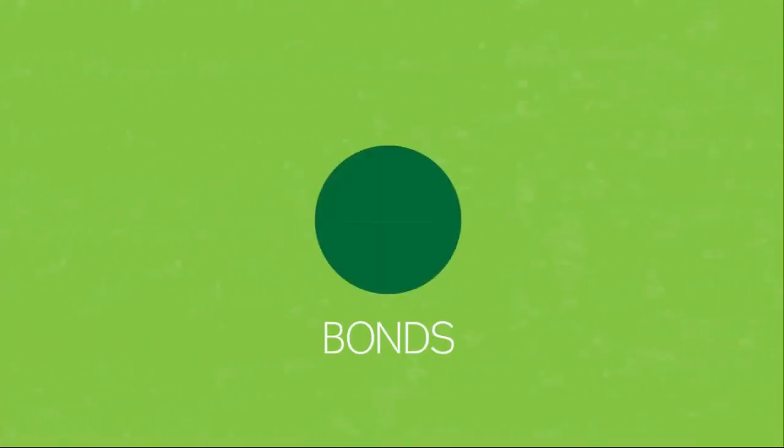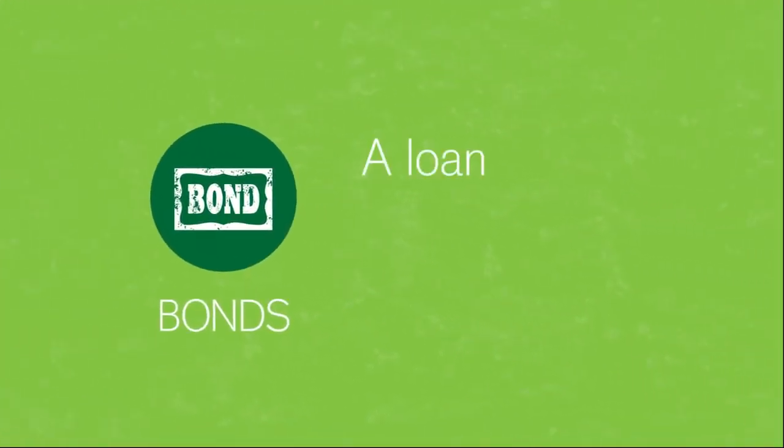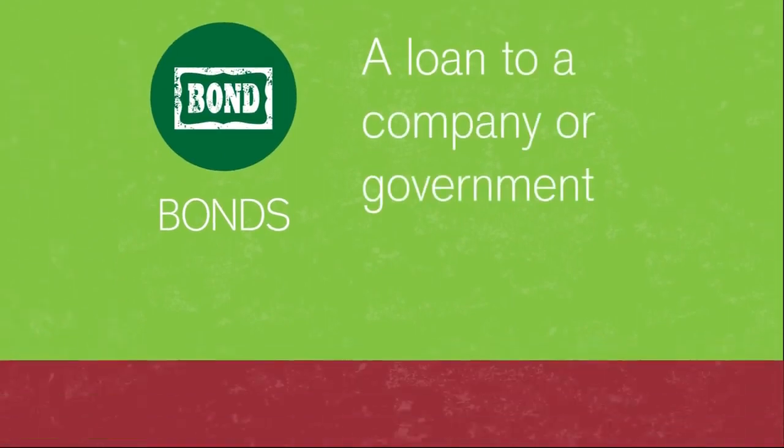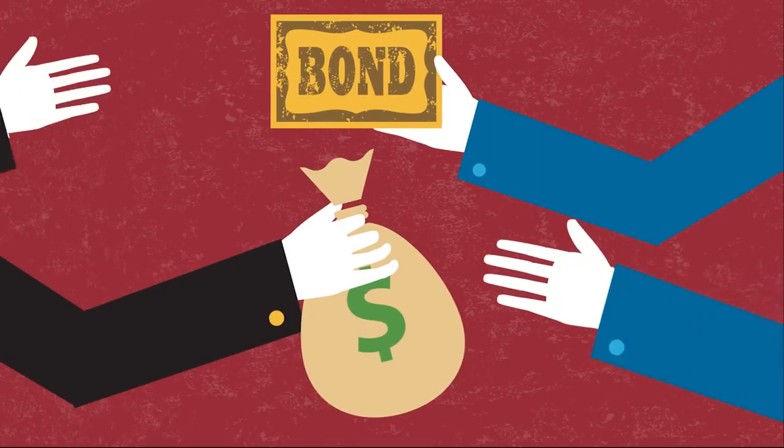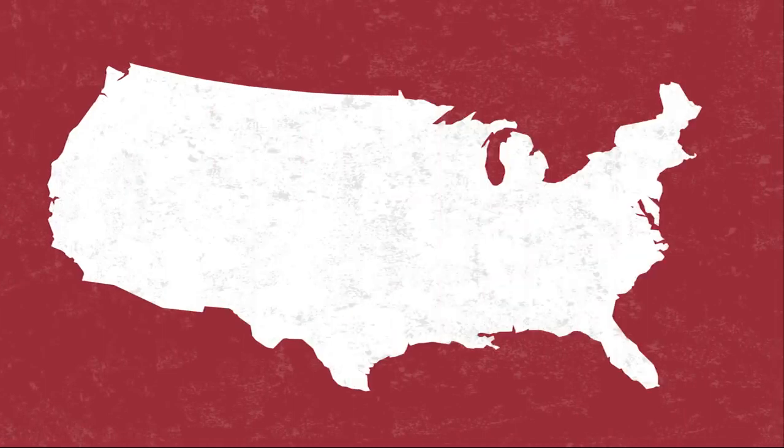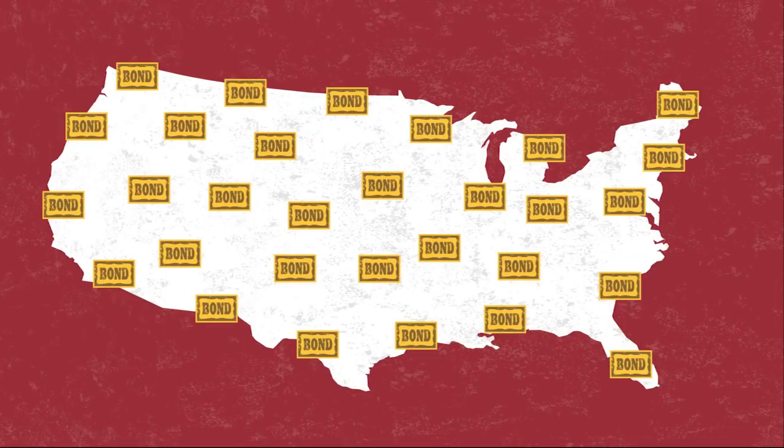Next up, bonds. Bonds are just a loan to a company or government. They borrow by selling a bond, which is simply a promise to repay the buyer in a fixed number of years at a fixed interest rate. When you hear about the U.S. government borrowing money, have you ever wondered who they borrow from? Chances are, it's you through the investments you make in bonds.